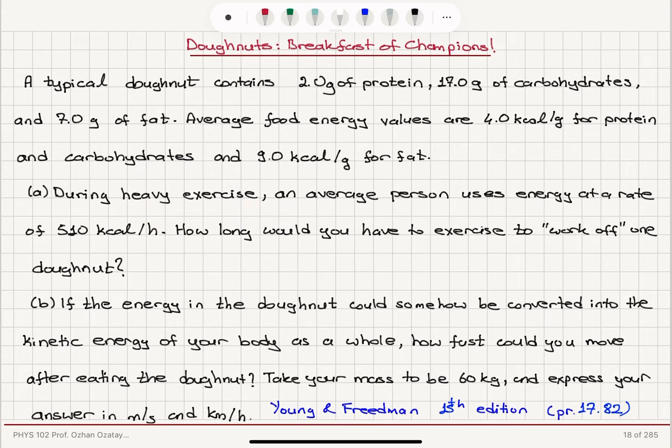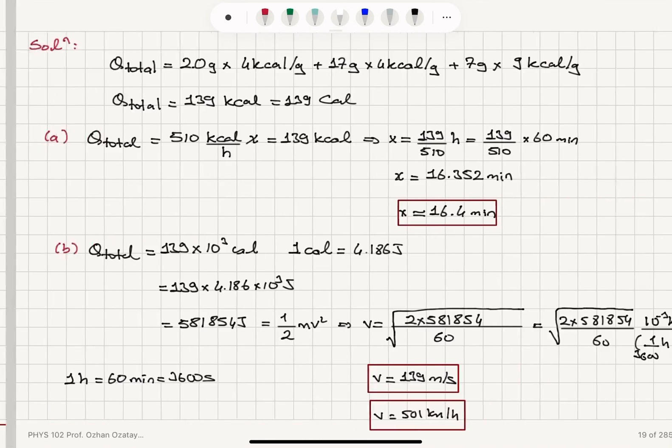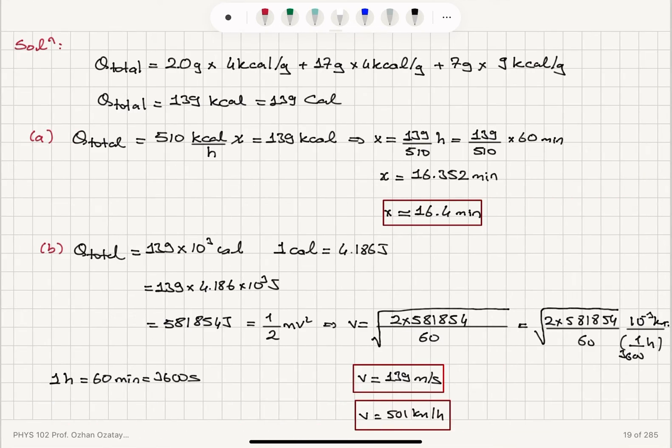If we have heavy exercise, we spend energy at a rate of 510 kilocalories per hour. So to work off one donut, we have to work X hours to get 139. X is 139 over 510 hours, or 139 over 510 times 60 minutes, which is 16.4 minutes.